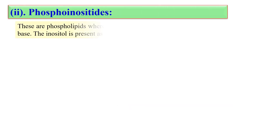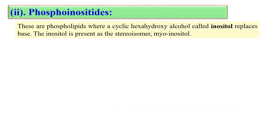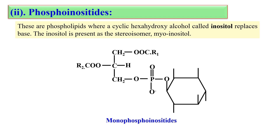The next category is phosphoinositides. Here in the structure you can clearly see that the phosphoric acid is now attached with inositol.